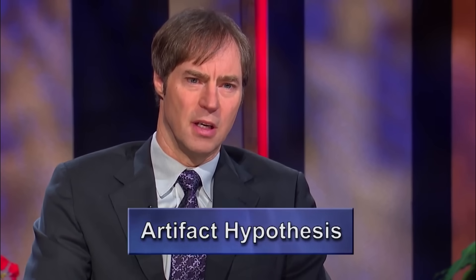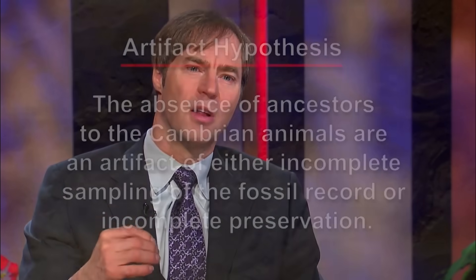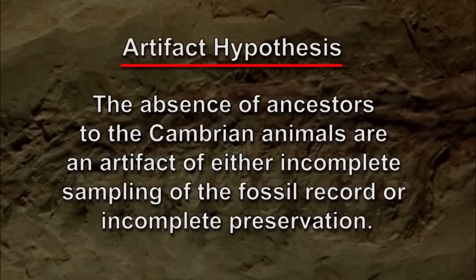The artifact hypothesis is a modified version of the idea that Darwin put forward in the 19th century — that we're not seeing the ancestral forms either because we haven't looked hard enough, or because for some reason these ancestral forms were not preserved. The missing ancestral animals to the Cambrian animals are missing as an artifact of either incomplete sampling of the fossil record or incomplete preservation.